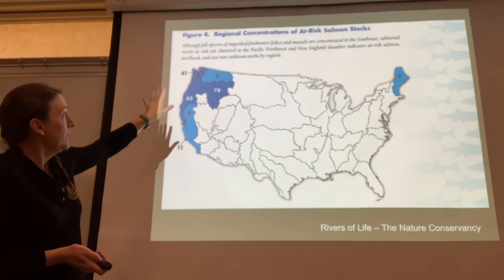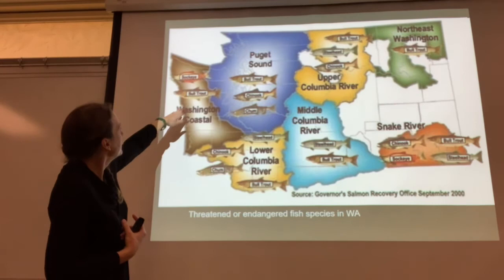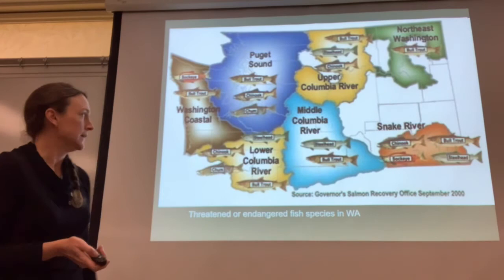We do have lots of regional at-risk salmon stocks around where we live. Around us, we have sockeye, bull trout, chinook, and chum, all at risk in different parts. We have other types of salmon that are at risk in other watersheds in Washington.